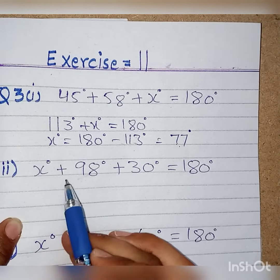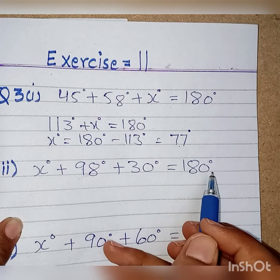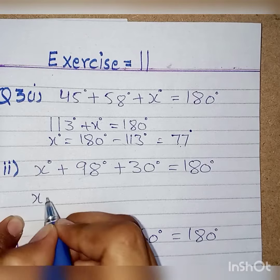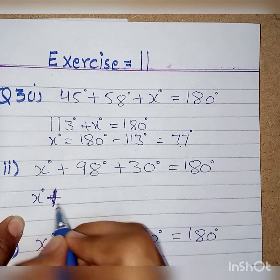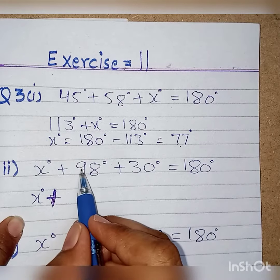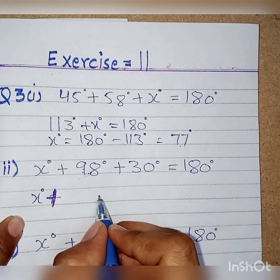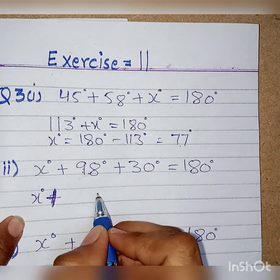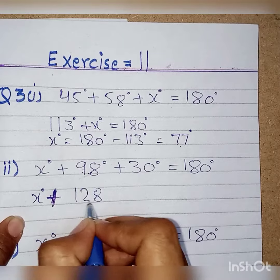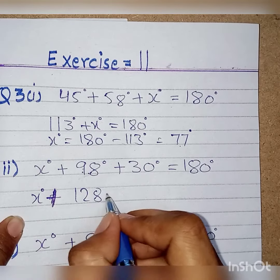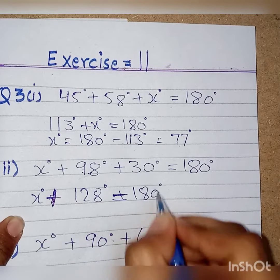Next, we have x degrees, 98 degrees, plus 30 degrees is equal to 180 degrees. We write x degrees. First, we will sum it. When we sum 98 degrees and 30 degrees, then we get 8 plus 0 is 8 and 9 plus 3 is 12. That means 128 degrees will be equal to 180 degrees.